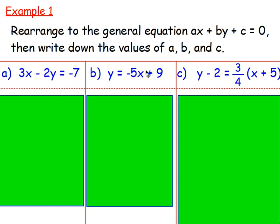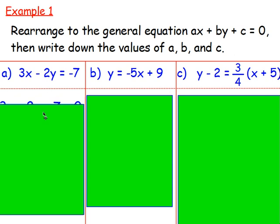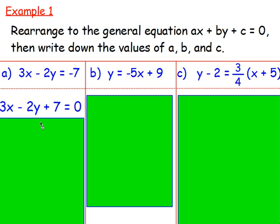Starting with: 3x take away 2y equals negative 7. The first thing you want to do is think — well, I want x and y on the same side, I want a number on the same side, I want 0 on the right — so you really want to get rid of this negative 7. You can add 7 to both sides, or move the negative 7 over and it will become a plus, giving us 3x minus 2y plus 7 equals 0.